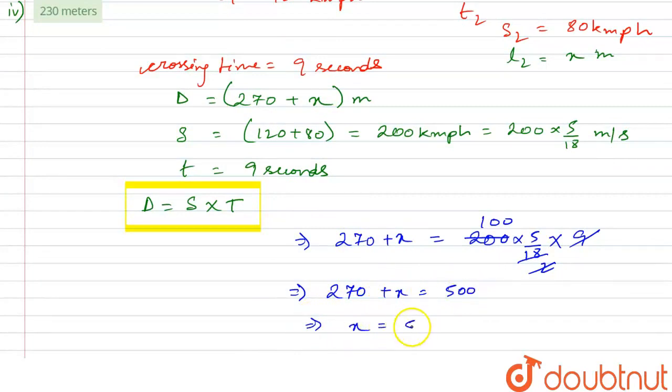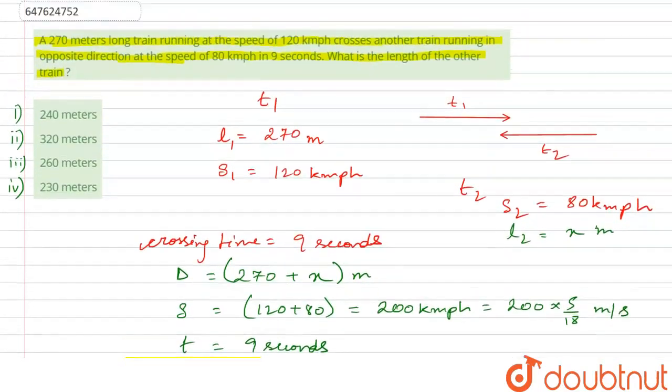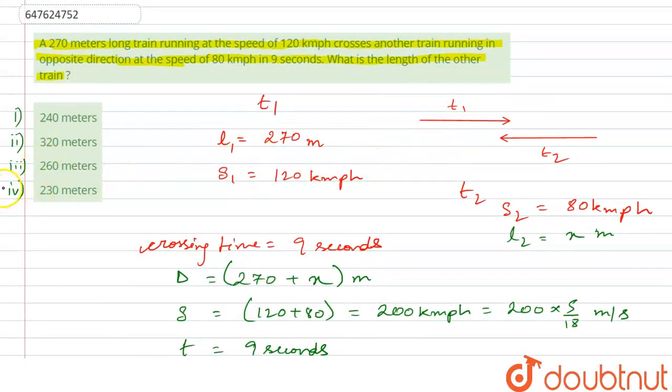So, this is the value of x here. Here, 500 minus 270 equals to 230 meter. So, how much length of our train is? 230 meter. So, option number 4 is correct. Thank you.